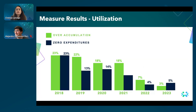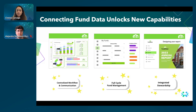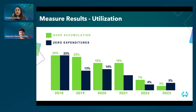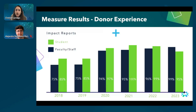Here we're sharing results from one of our clients. By implementing a consolidated model and having a centralized hub of information with compliance standards continuously monitored and tracked, organizations are able to significantly reduce their risks. The chart shows the percentage of funds over the years that went unspent — with zero expenditures within a fiscal year — and funds excessively accumulating more than two years' worth of endowment distributions. This organization in 2018 was only using 77% of their funds available; today they're using upwards of 95-97% of those funds. It's super important to have all these processes in place to track fund utilization and ensure you're honoring donor intent.